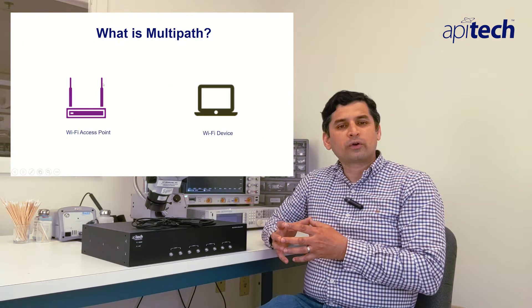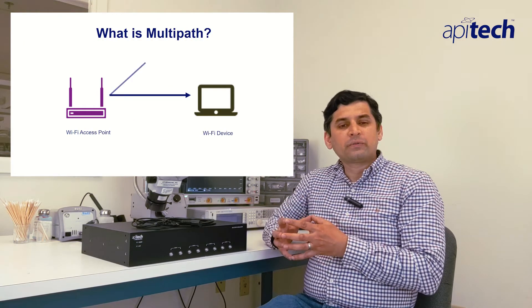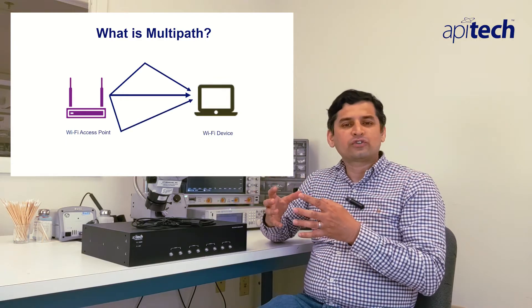Before we discuss the features of the Wi-Fi 6E Multipath Emulator, let's review what multipath is and why it is important. Consider the Wi-Fi access point you have in your house. The signal transmitted from the Wi-Fi access point takes multiple paths to reach your Wi-Fi device. Your Wi-Fi device needs to be able to distinguish the original signal from the multiple copies it receives in a multipath environment. Basically, the multipath emulator creates those multipath conditions by delivering delayed and attenuated versions of the signal. The design model is based on TGN channel models as detailed in 802.11 specifications.